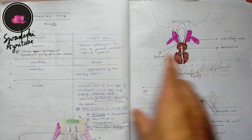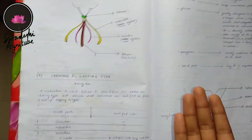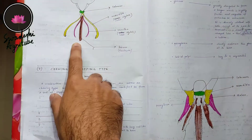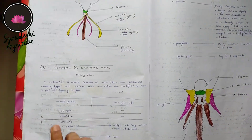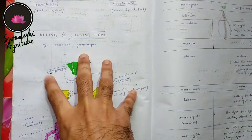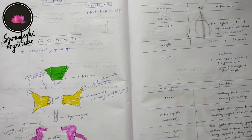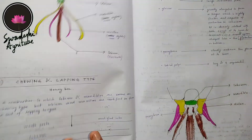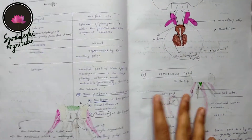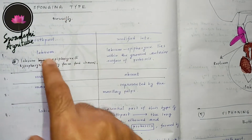In this video I'm going to talk about the modification of the sponging type of mouthparts. In the previous video I discussed the chewing and lapping type, piercing and sucking type, and biting and chewing type of mouthparts. If you know the biting and chewing type of mouthpart very well, you can easily remember all the modifications in this chapter using the same terminology.